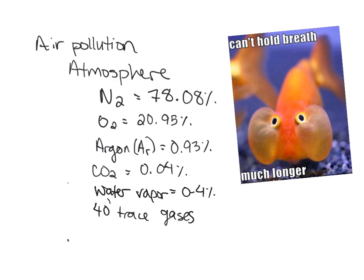Trace gases can include stuff like ozone, helium, hydrogen, nitrogen oxide, sulfur dioxide, neon, and then you also have some aerosols. Aerosols can include microscopic liquid and solid particles like dust, carbon, or pollen, sea salts, and even some microorganisms. We talked about aerosols when discussing the water cycle — condensated water needs something to stick onto, and that's aerosols.